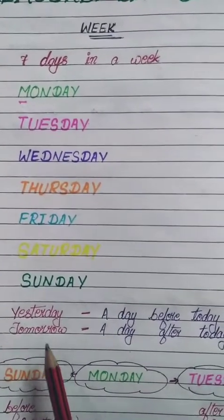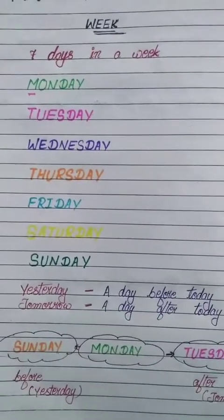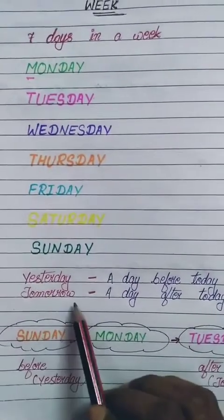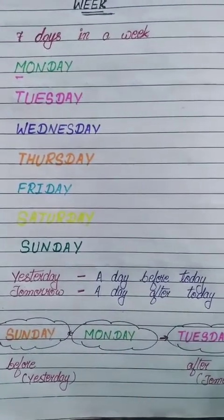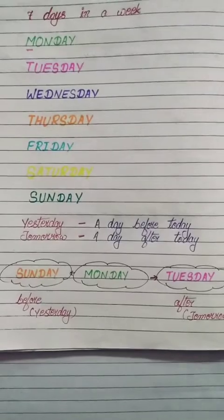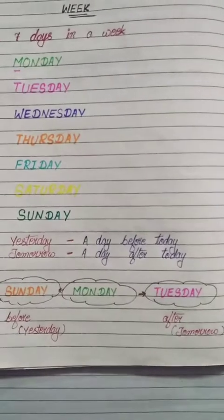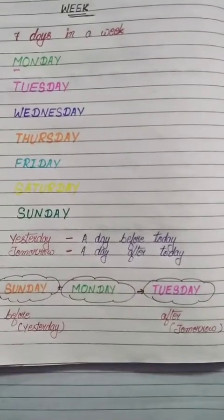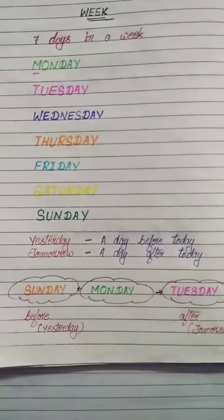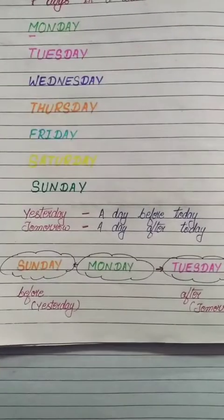Now, yesterday means a day before today. Tomorrow means a day after today. For example, suppose today is Monday. What comes after Monday? After Monday comes Tuesday, and that is tomorrow. And what comes before Monday? That is Sunday, and that is yesterday.